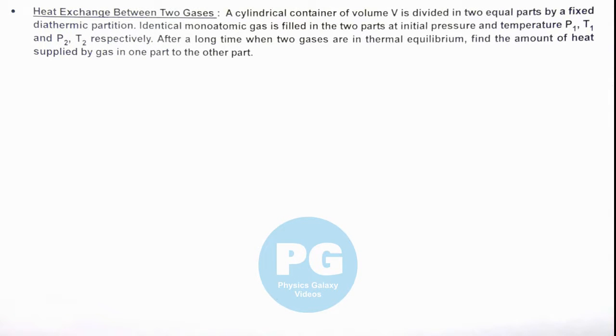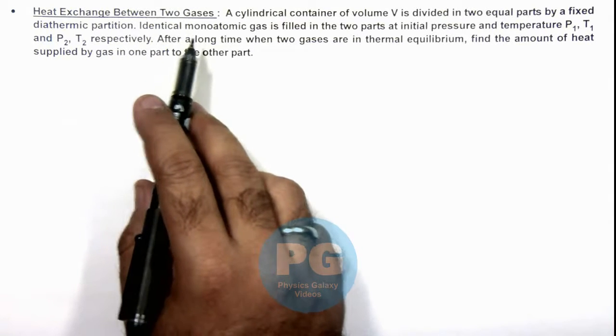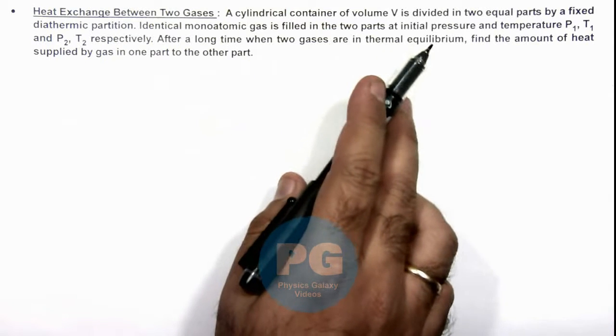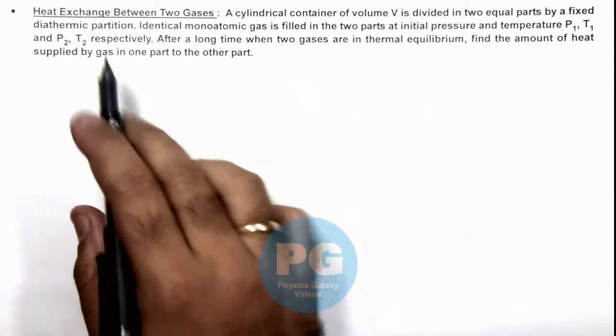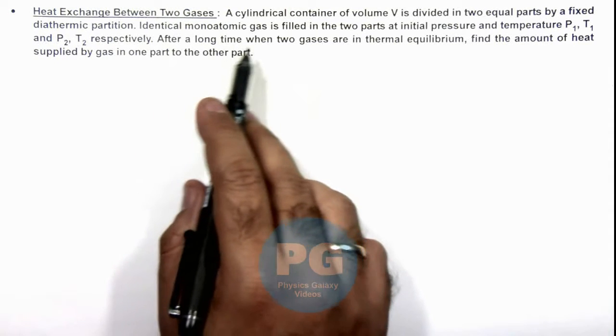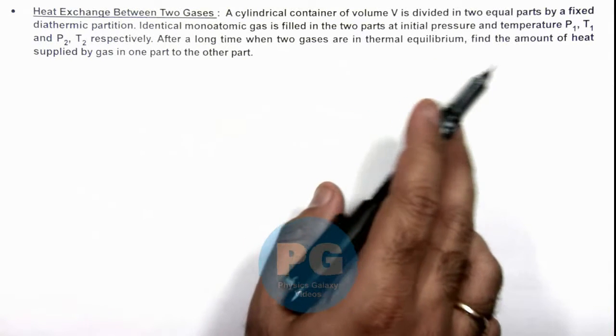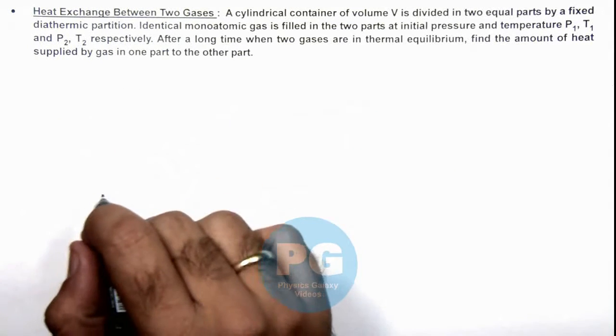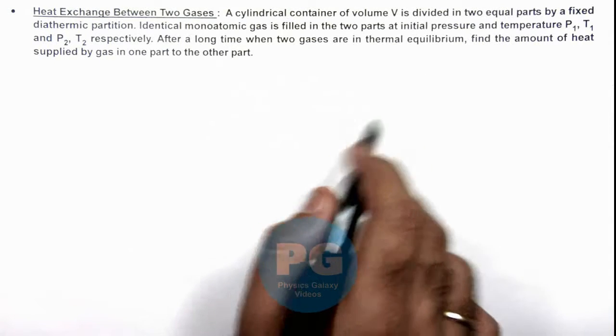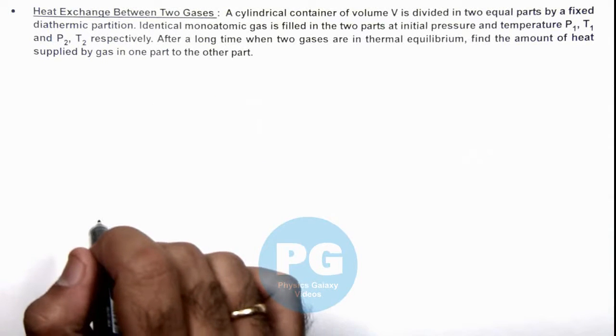In this illustration, we'll study heat exchange between two gases. Here we are given that a cylindrical container of volume V is divided in two equal parts by a fixed diathermic piston. An ideal monatomic gas is filled in the two parts at initial pressure and temperature P₁, T₁ and P₂, T₂. After a long time when two gases are in thermal equilibrium, we are required to find the amount of heat supplied by gas in one part to the other part.